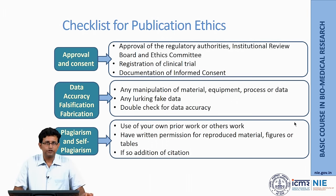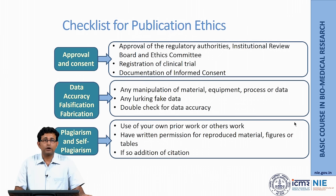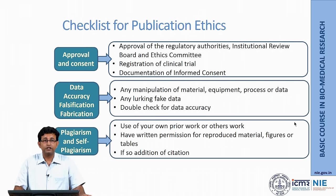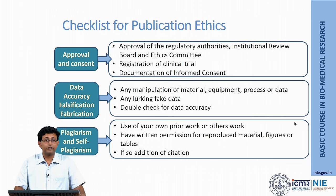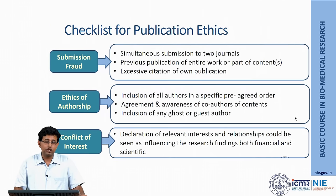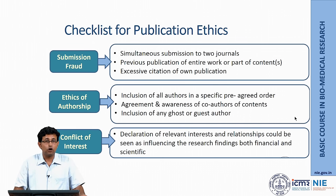To summarize the checklist for publication ethics: when planning, get ethics committee approval and obtain consent or assent. When collecting data, maintain data accuracy and avoid falsification or fabrication. Check plagiarism using your university's or institution's recommended tools and keep it as minimum as possible. Submit your manuscript to only one journal at a time. Maintain ICMJE authorship criteria and choose the right authors. Finally, disclose all conflicts of interest. Thank you.